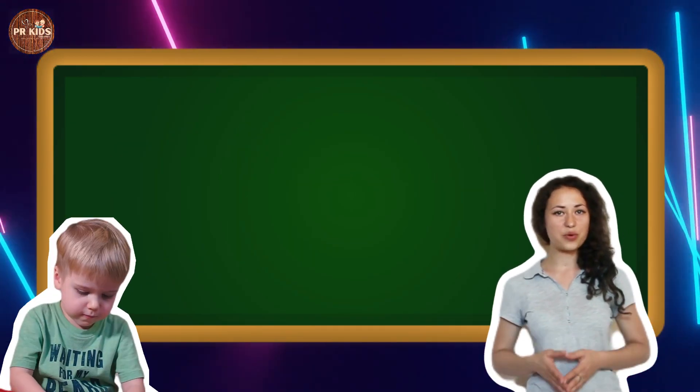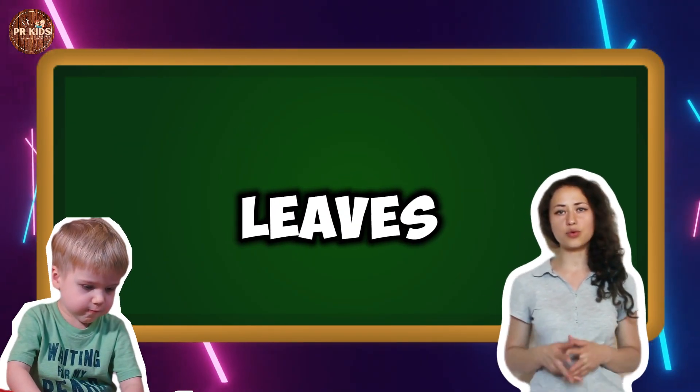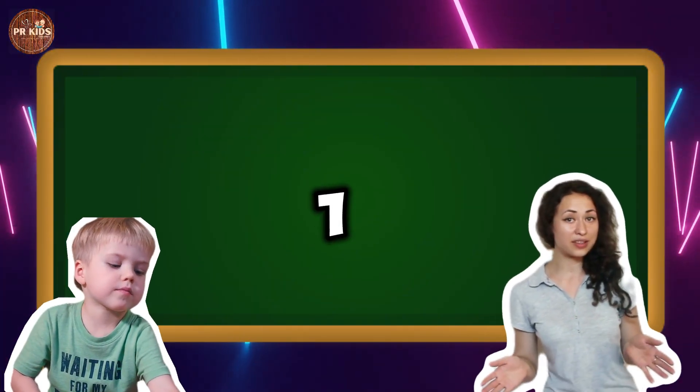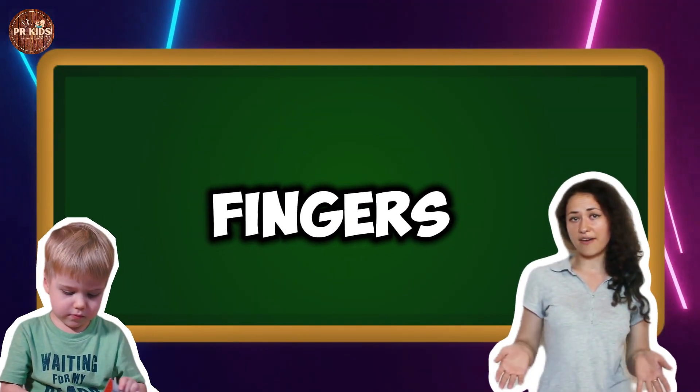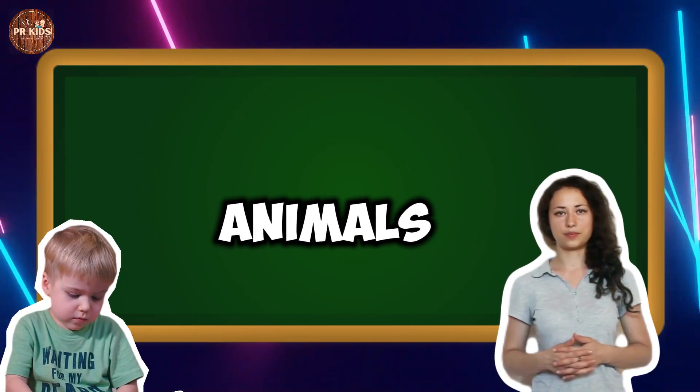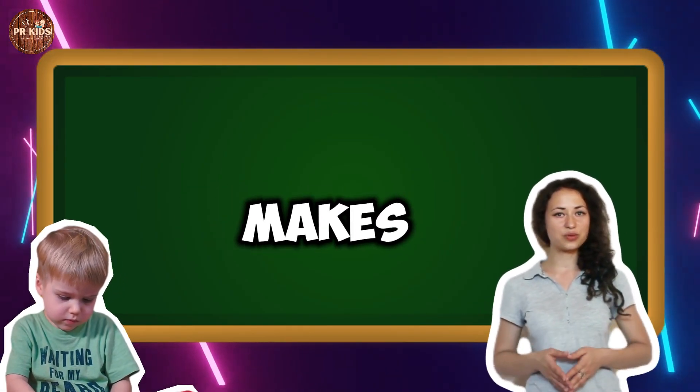Four minus two leaves two fingers. Three minus one leaves two fingers. Two animals plus two animals makes four animals. One, two, three, four - four animals.